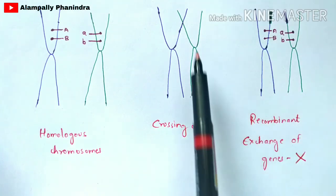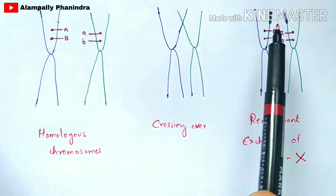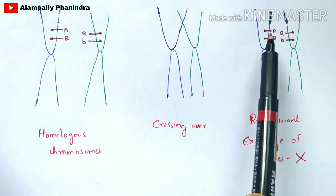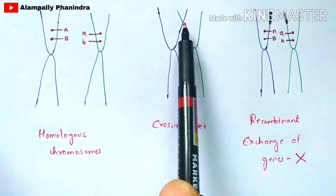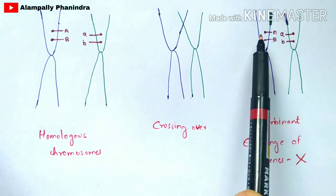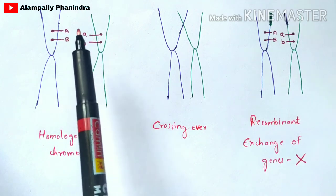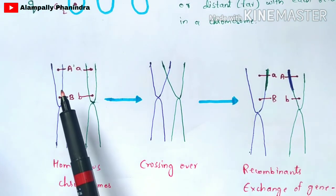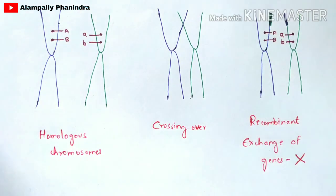When crossing over occurs with near genes, the chromosome will get exchanged but the genes will not get exchanged. The recombinant chromosome is obtained, but the exchange of genes doesn't occur because the exchange happens at the upper region of the chromosome while the genes are positioned a little lower. So capital A and capital B remain in the left chromosome — they cannot be exchanged. If the distance between genes is less, crossing over may occur but gene exchange does not. Only when the distance is more does both crossing over and gene exchange occur.